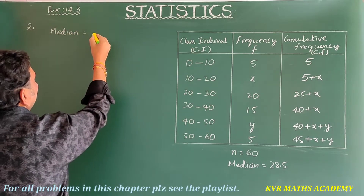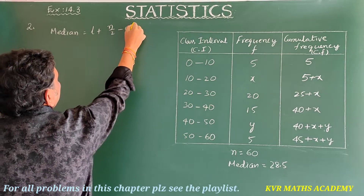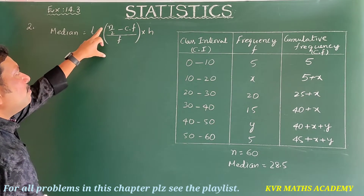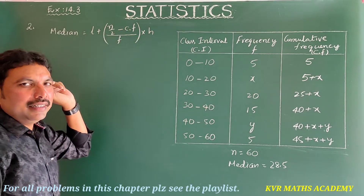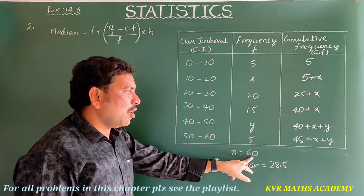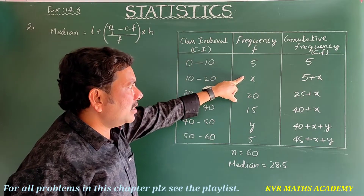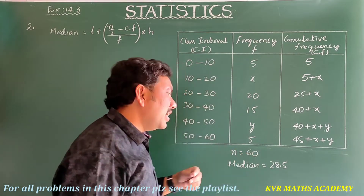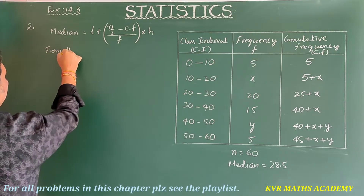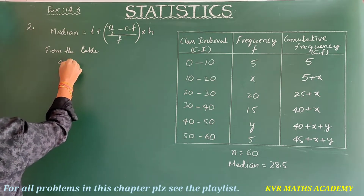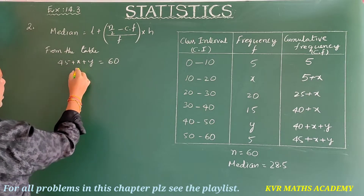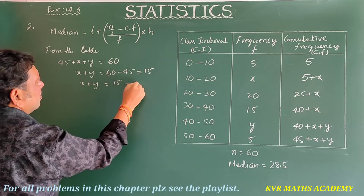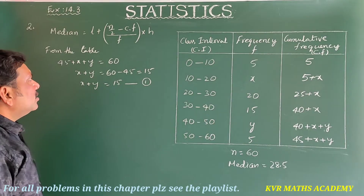The median formula is: Median = L + [(n/2 − cf) / f] × h. From the table, the total frequency gives us: 45 + x + y = 60, so x + y = 15. This is Equation 1.